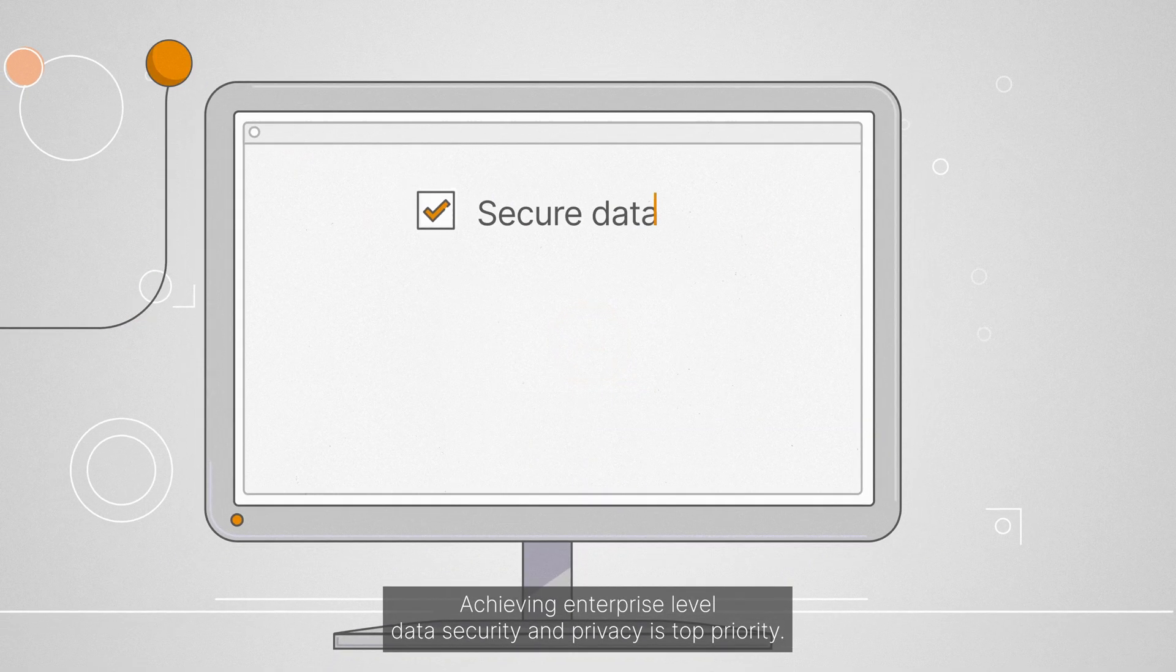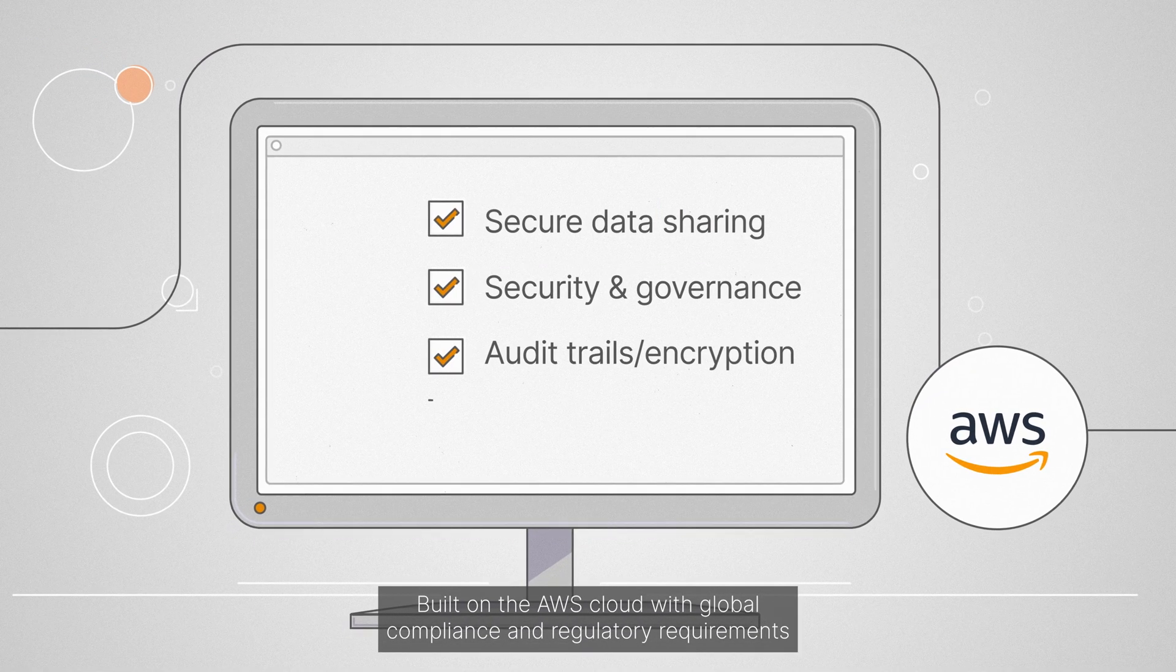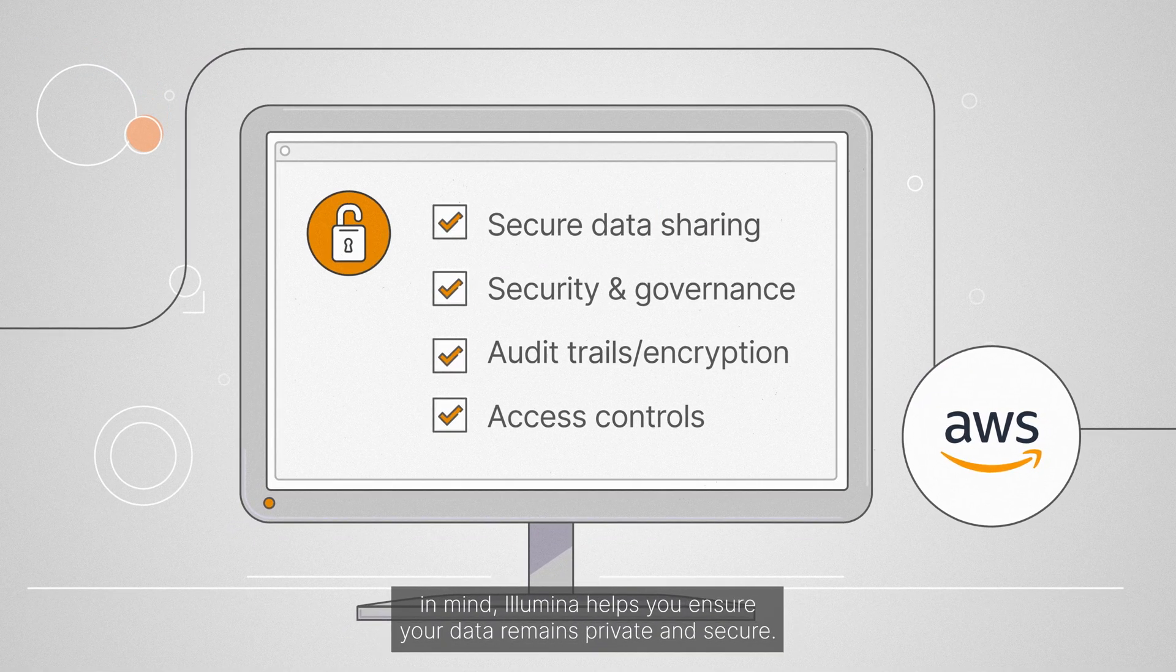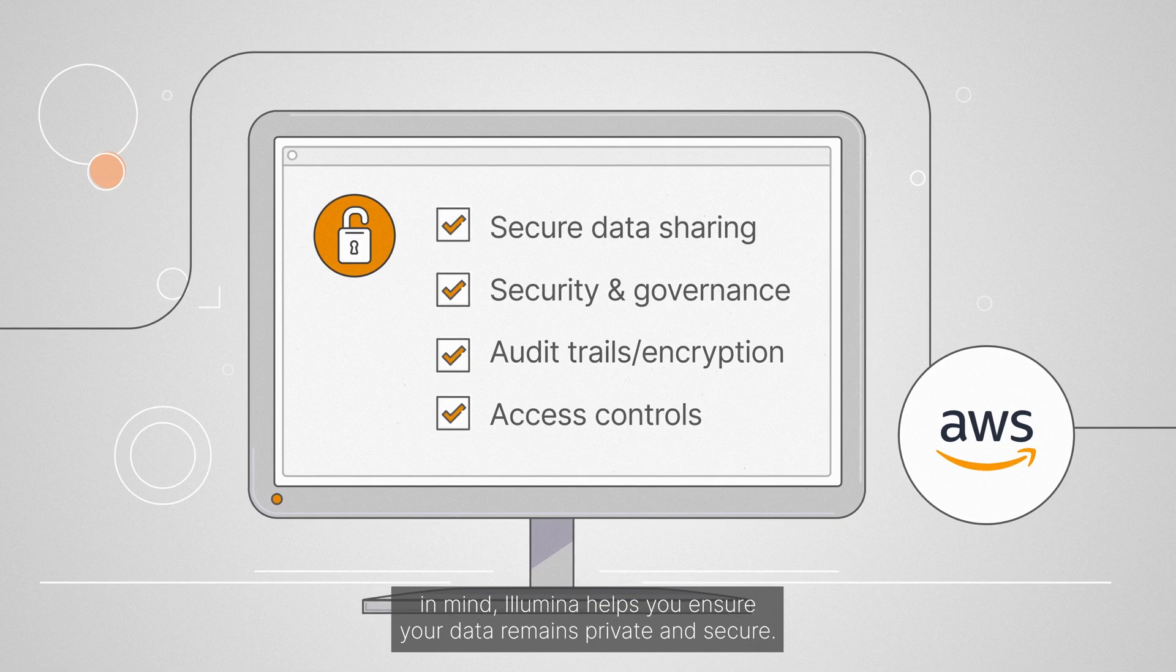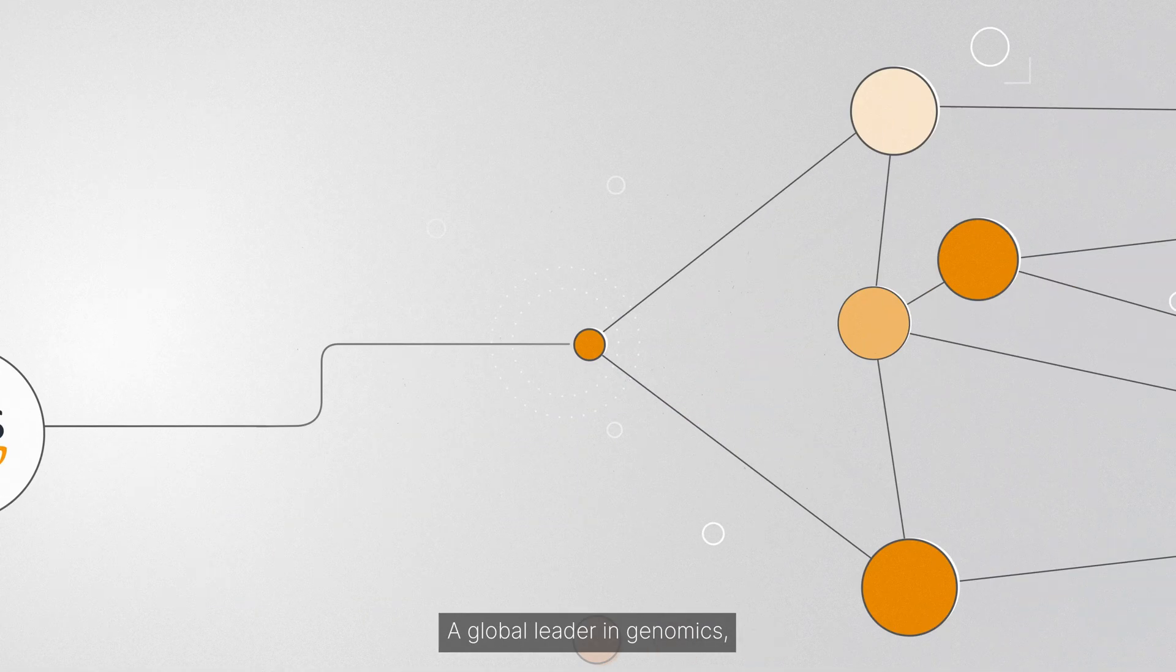Achieving enterprise-level data security and privacy is top priority. Built on the AWS cloud with global compliance and regulatory requirements in mind, Illumina helps you ensure your data remains private and secure.